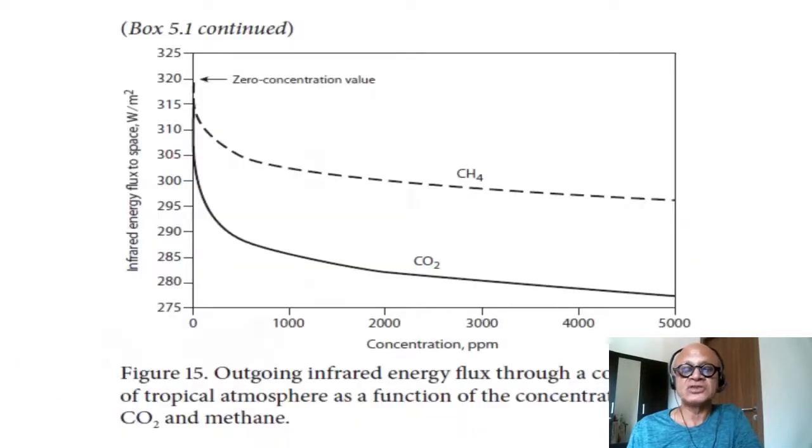Looking at infrared energy flux to space in watts per meter squared and the concentration of methane and CO2, you can see that CO2 will continue to absorb energy in the infrared for a long time, way out to 5000 ppm. Methane remains high at above 300 watts per meter squared. Obviously this is an incredibly high amount of methane. Remember, methane is two orders of magnitude smaller than CO2, so we have to be careful. Nonetheless, this is how methane affects radiation balance and global warming.